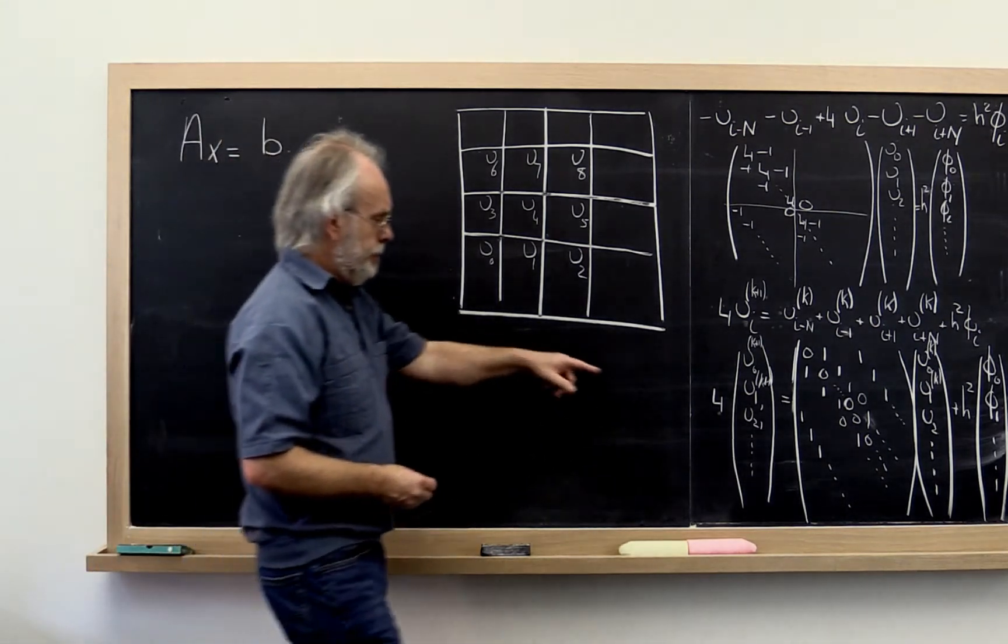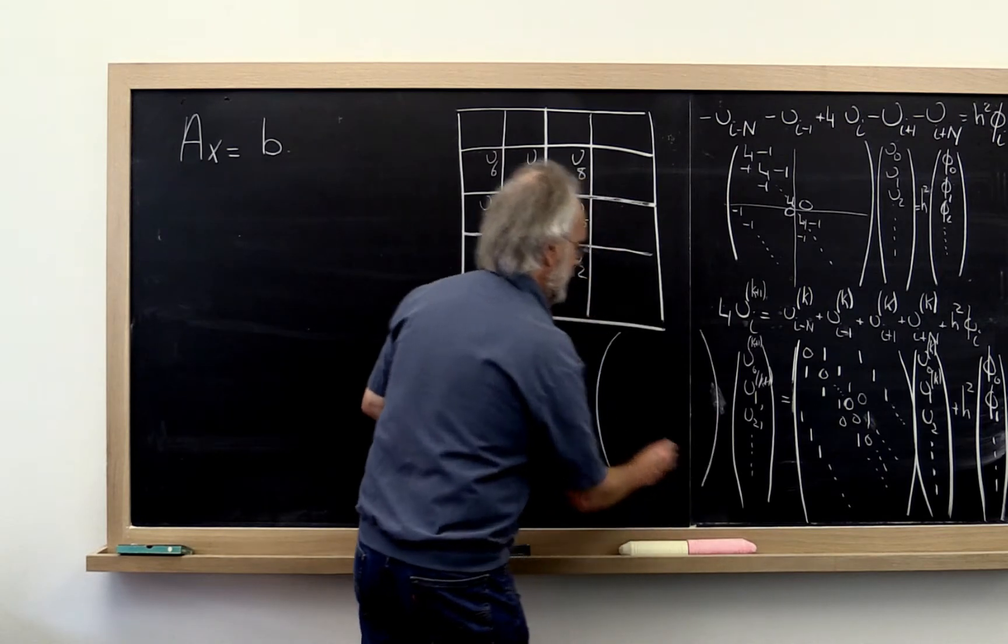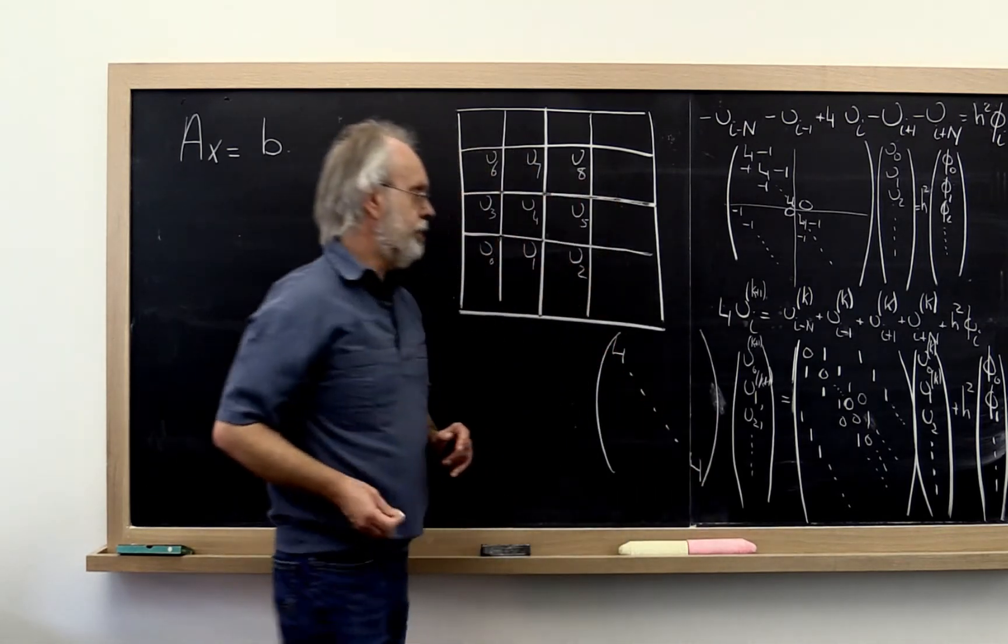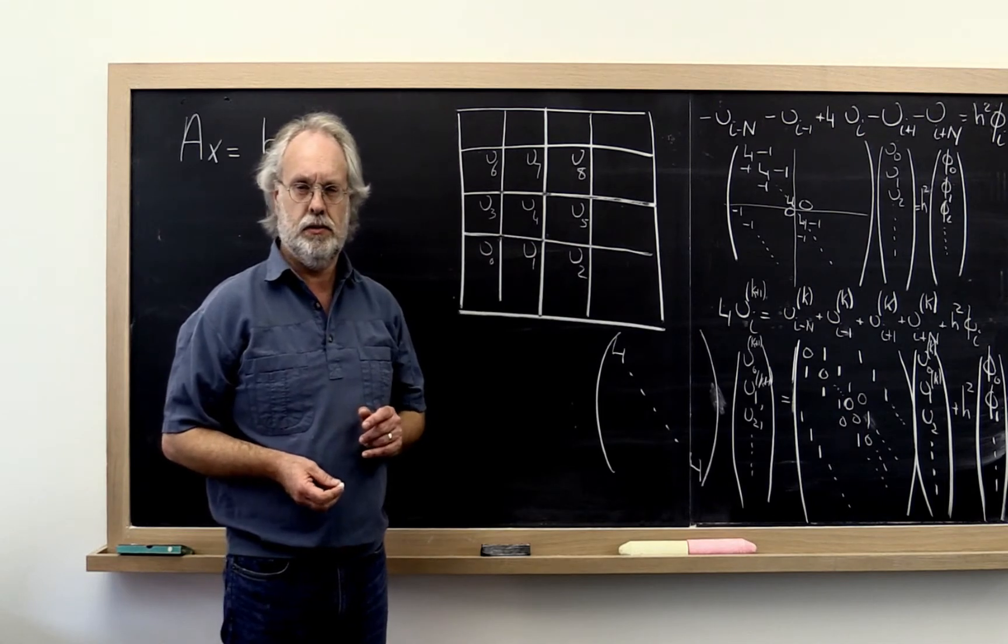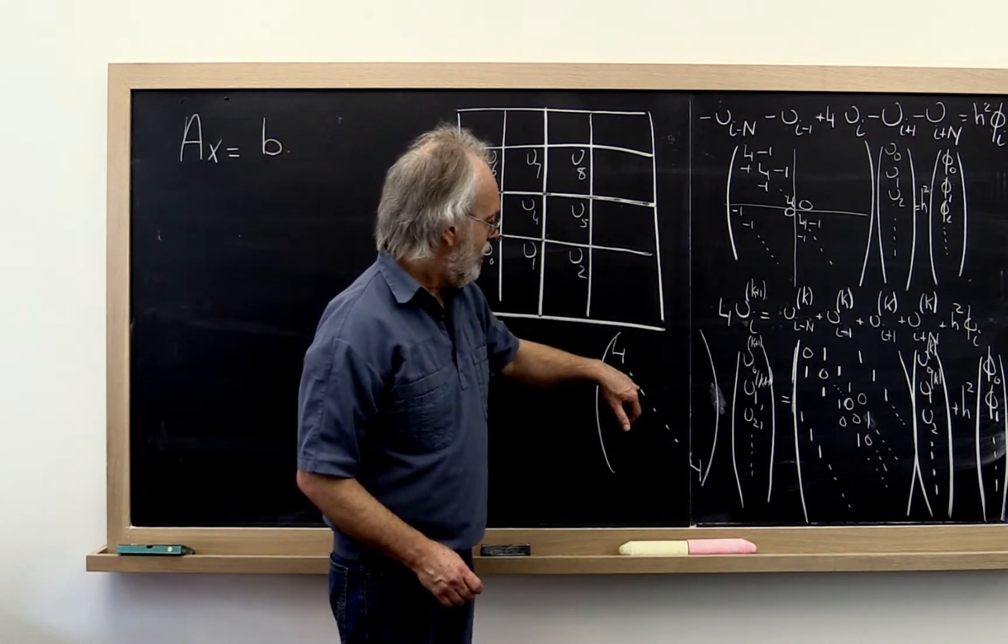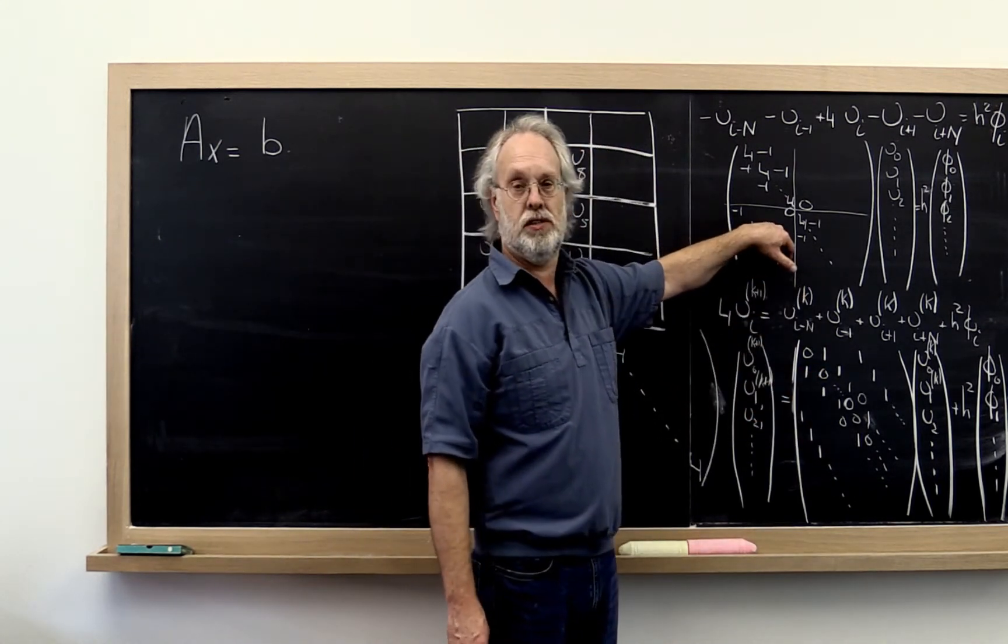If you look at it carefully, this four right here can be thought of as the diagonal matrix with all fours on the diagonal. And the pattern you may notice is that this matrix minus this matrix is exactly the matrix that we started with.